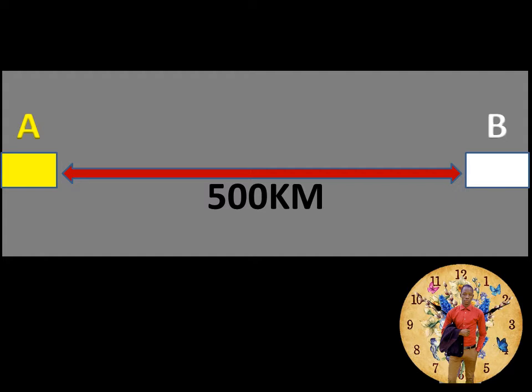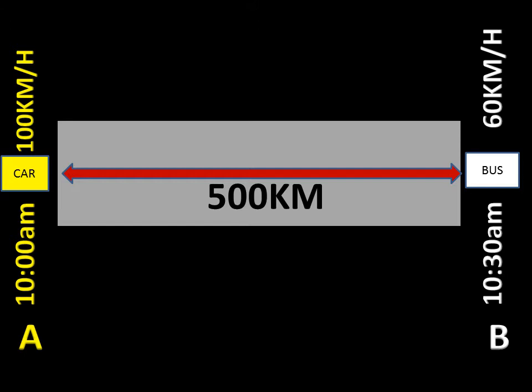In this first interpretation, we have two towns A and B which are 500 kilometers apart, and we have a bus and a car moving towards each other. On the bottom left of the screen is town A. Going up, we have 10 a.m., which is the departing time of the car. The car is represented by the yellow box and its speed is 100 kilometers per hour.